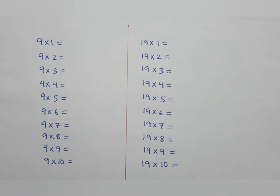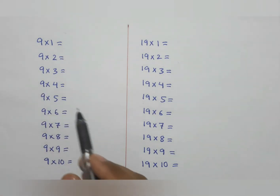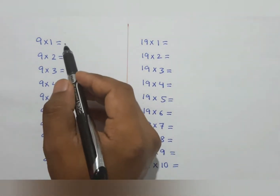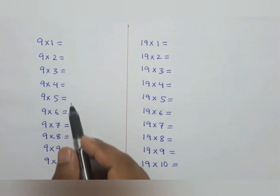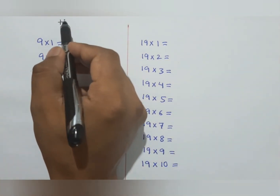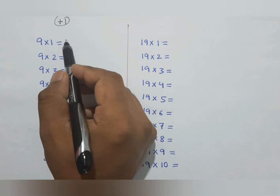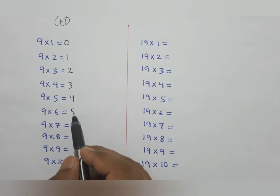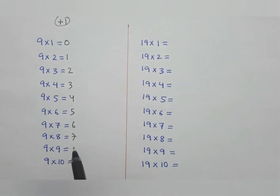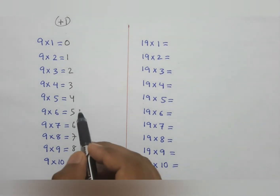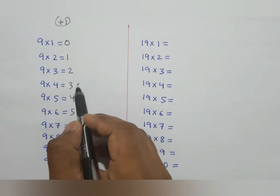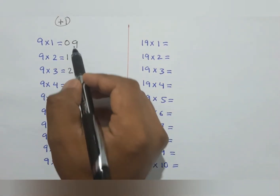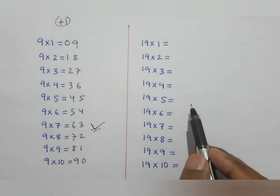We are going to learn the table in an easy way within a few seconds. Start from 9. The first digit of the number — we add plus 1 each time going down. The right side border is always the same: 0, 1, 2, 3, 4, 5, 6, 7, 8, 9. That is the 9 times table.